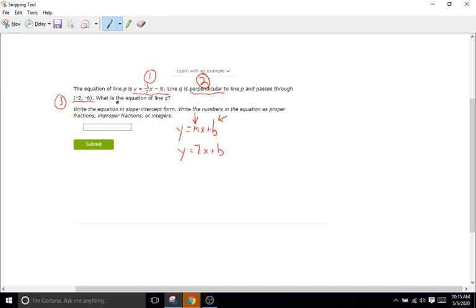Do we have our B yet? We do not. But what we can do is since we have our point we can now plug in our point to our equation and figure out what B is. So we'll plug in -2 for x and -6 for y. So y is going to be -6 equals 7 times -2 plus B. Okay so -6 equals -14 plus B. Now to get B by itself we just add 14 to both sides and we are left with 8 equals B.